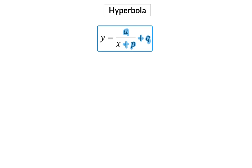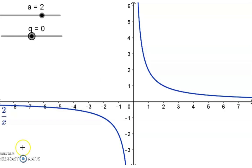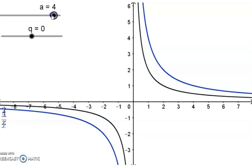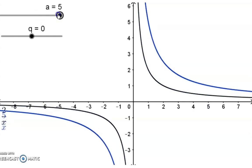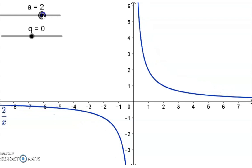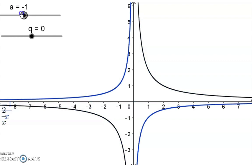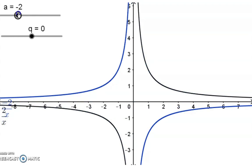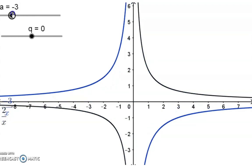In grade 10, we had a look at the transformations that a and q indicate. Here we have the mother graph of the hyperbola y is equal to 2 over x, and it's in the first and third quadrant. As the a value increases, the graph moves further away from the axes. This a value can also be negative, which would indicate a reflection around the x-axis. If we make this a value negative, you will see that the two parts of the hyperbola now lie in the second and fourth quadrant.